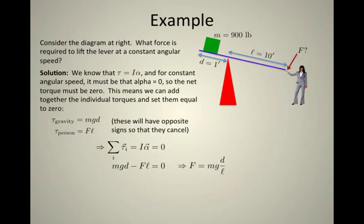Force has to equal mg times the ratio d over l. This is that key point we talked about before: if the weight of something is, say, 900 pounds, you don't have to push with an equal force to lift that object because of the ratio d over l.